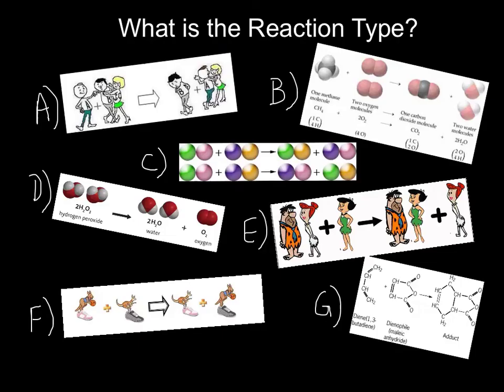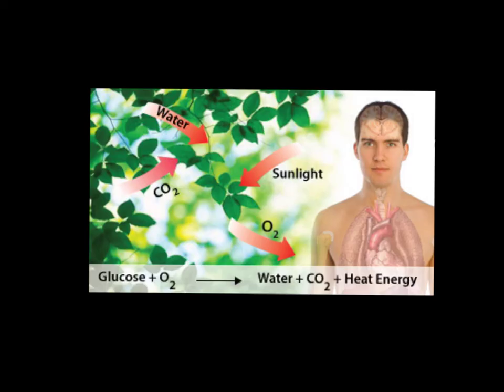Here are seven different reactions represented in pictures. Push pause and label them A through G on your notes. Use your keys for kids to check each picture and figure out which reaction type it represents. This is also an example of a combustion reaction that happens in our bodies: glucose, which is a hydrocarbon, reacts with oxygen to make water and carbon dioxide, produces heat — and even though there's no flame, it is burning sugar.